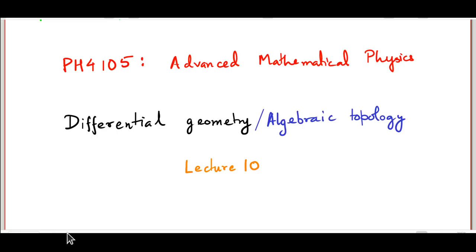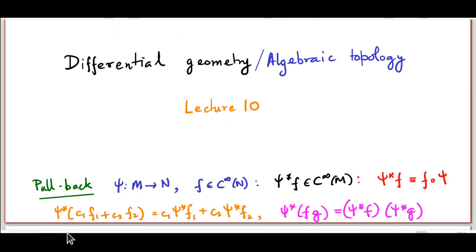In order to talk about that, we must remind ourselves of an operation that we talked about earlier, something called the pullback. The pullback essentially depends on a map, a smooth map, shy, between two differentiable manifolds M and N. We are going to assume that all our manifolds are C-infinity manifolds from now on, unless otherwise mentioned.